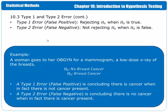A type 1 error is considered a false positive, or rejecting the null hypothesis when, in fact, it is true. A type 2 error is a false negative, which is not rejecting the null hypothesis when, in fact, it is false.